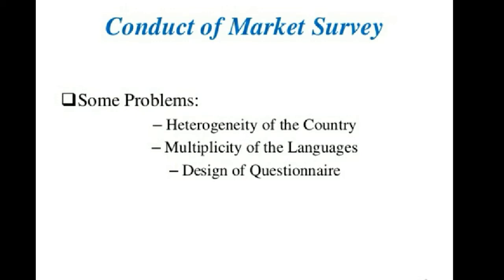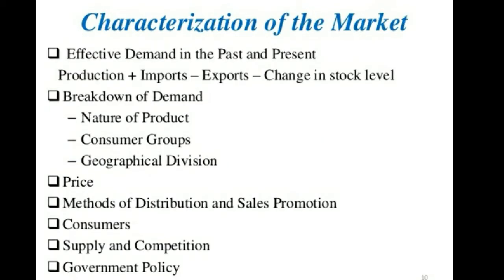These are the three major problems faced in market survey. The next point in Market and Demand Analysis is stage number 4: characteristics of the market. Based on information gathered from secondary data and primary sources, the market for a product or service may be described in terms of the following characteristics as given in the slide. There are 7 major characteristics: effective demand in the past and present, breakdown of demand, price, methods of distribution and sales promotion, consumers, supply and competition, and seventh, government policy. In today's session, we will discuss only two characteristics.